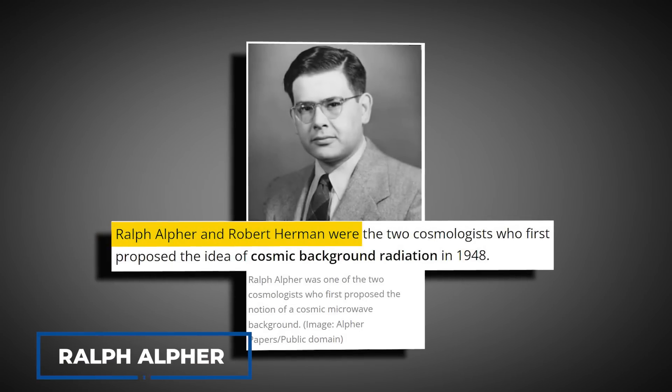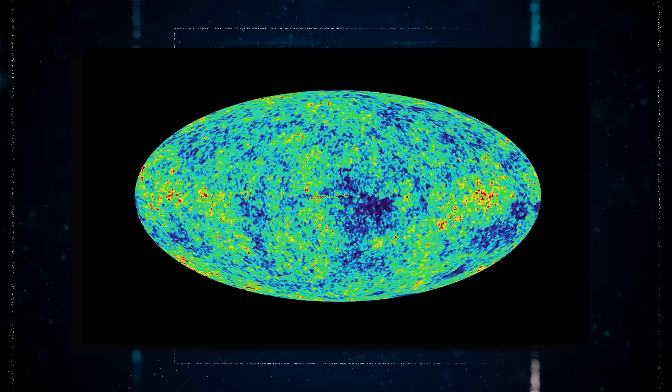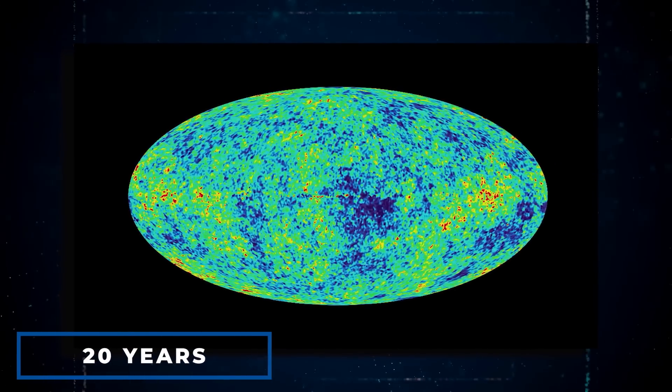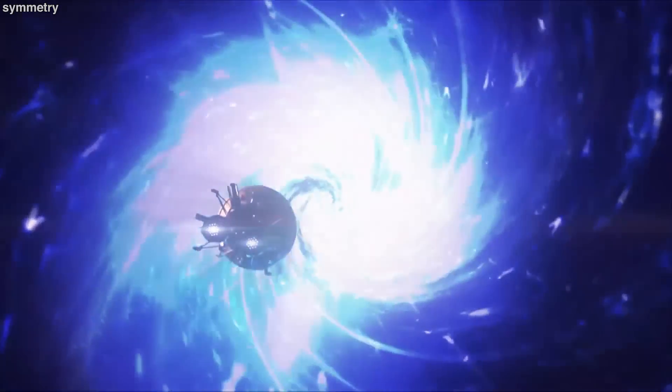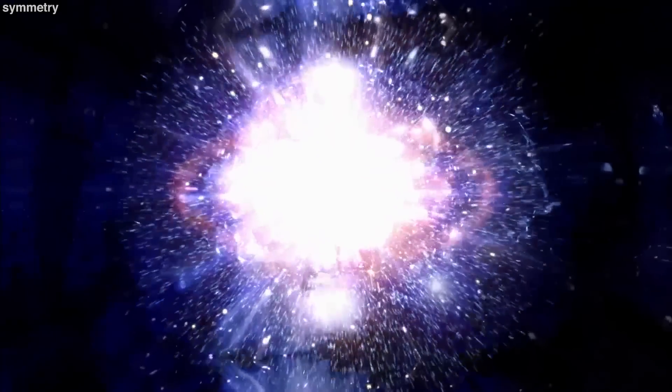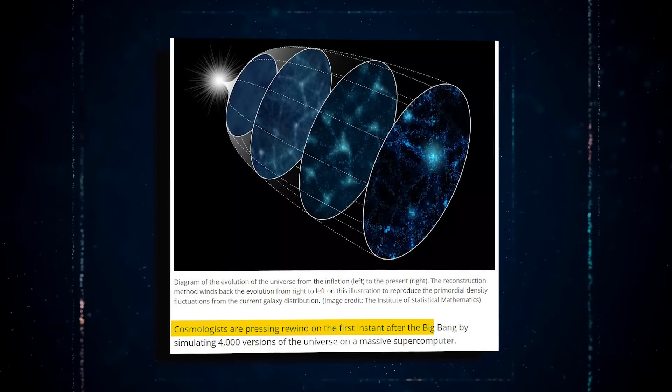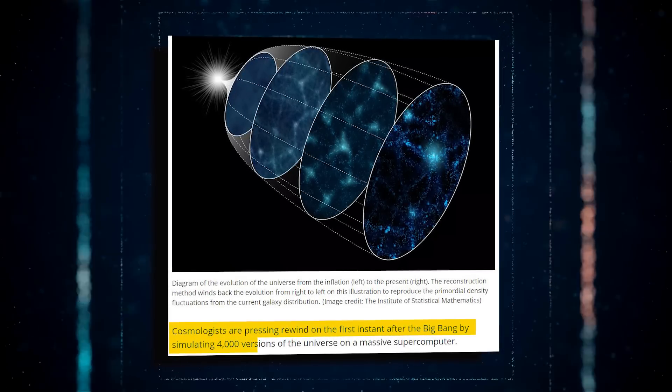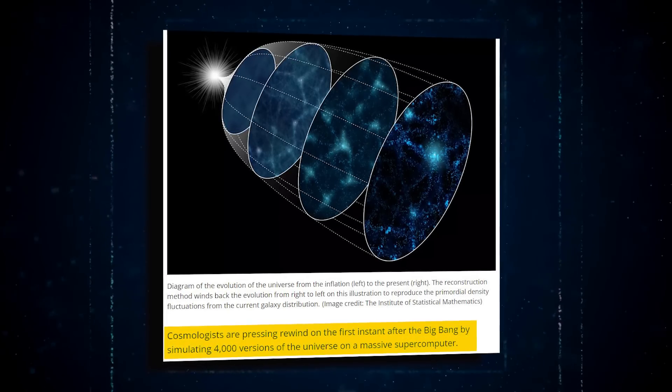It was predicted by Ralph Alpha and other scientists in 1948, but was discovered by chance approximately 20 years later. Scientists have been trying to figure out how to see the Big Bang through other means because we can't view it directly. In one scenario, cosmologists are using a large supercomputer to simulate 4,000 versions of the current universe in order to reach the first instant after the Big Bang.